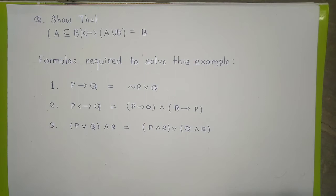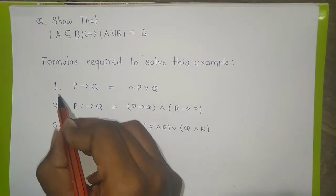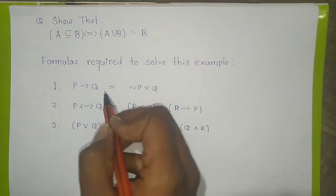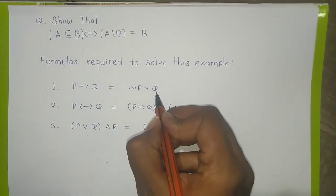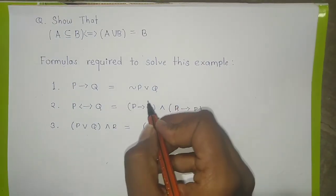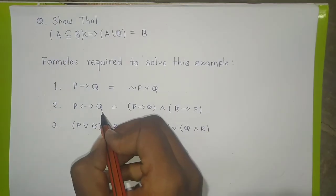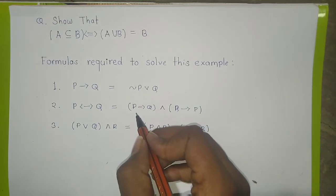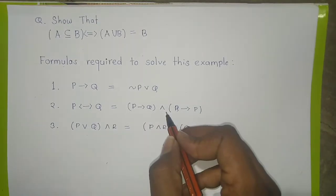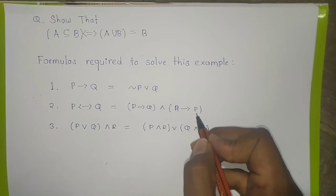First of all we see some formulas which are required to solve this example. The first one is P implies Q, which is nothing but negation P or Q. The second one is P double implies Q, which is nothing but in the first bracket P implies Q, and in the second bracket Q implies P.